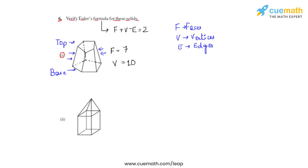And the number of edges in this figure or this solid would be 15: 5 for the pentagon at the top, 5 for the pentagon at the bottom, and 5 at the lateral part of this figure.